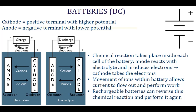A chemical reaction takes place inside the cell of every battery. The anode reacts with the electrolyte between them and produces the electrons which flow. The cathode then takes those electrons. Movement of ions within the battery allows current to flow out and perform work. Rechargeable batteries can reverse this by doing a different chemical reaction to boost those electrons back so they can flow again.